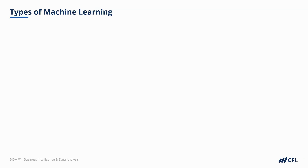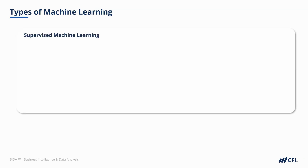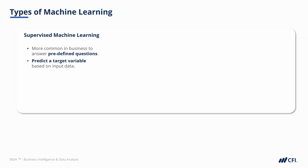First, let's talk about supervised machine learning. This technique is common in business and tends to help answer predefined questions. We try to predict the value of a target variable using a set of input data. Once the model has understood the relationship between variables, the output can be used to make predictions about new data.